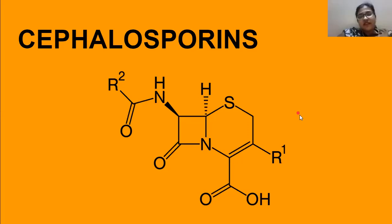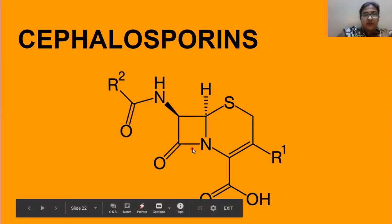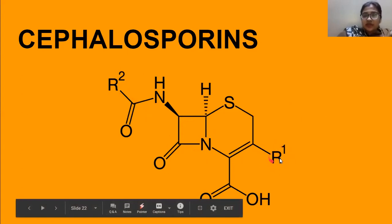Let's talk about cephalosporins. As you can see, the structure is very similar to penicillin, but it has nitrogen and a carboxyl group in the beta-lactam ring, which is the target site for breaking it. Here we have two R groups: R1 and R2, which is one important thing to notice.